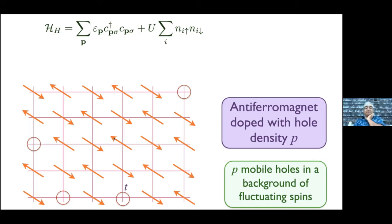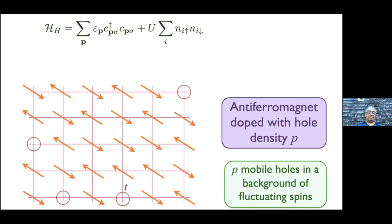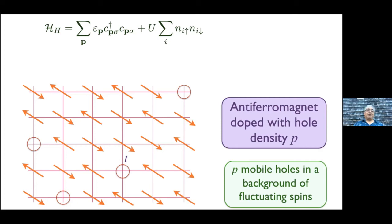Something analogous to what we saw in the Kondo lattice: if this is a metal, what is the carrier density? One point of view is that the number of electrons is 1 − p, where p is the density of holes, so the number of holes is 1 + p. Another point of view is that you see only the holes moving in this background, so the density of carriers should be p. It's either 1 + p or p depending how you look at it — very similar to the difference between FL* and FL, where FL* had density p and FL had density 1 + p.